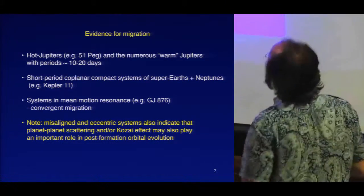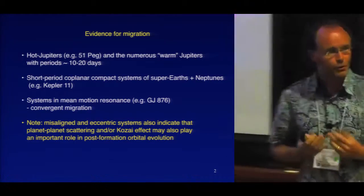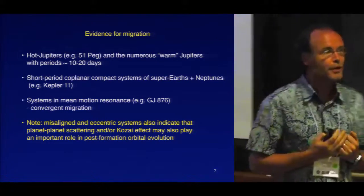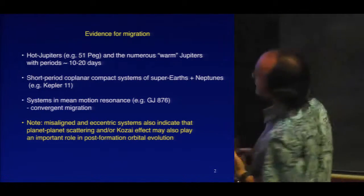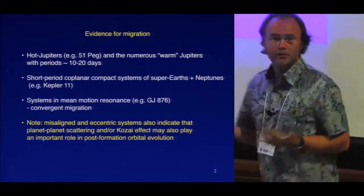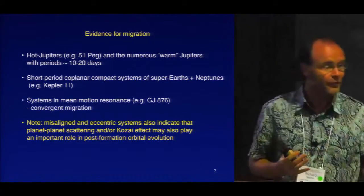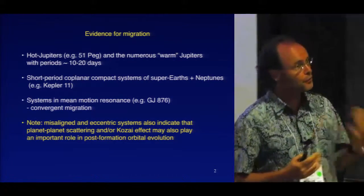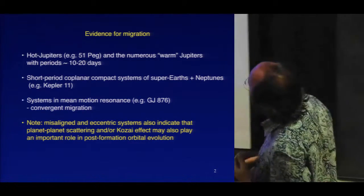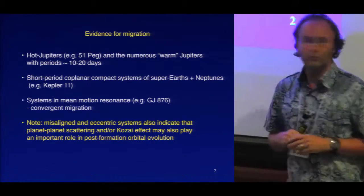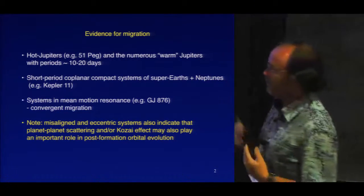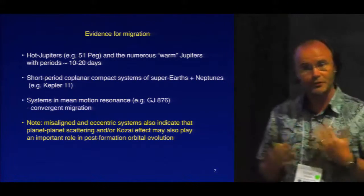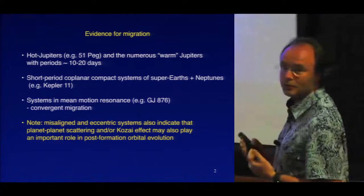Migration is a process which people talk a lot about when discussing extrasolar planets. Let's review what the evidence is that migration really happens during planet formation. We have the hot Jupiters, but there are a number of models for how one actually forms hot Jupiters — some involving interaction with the gas disk and smooth migration, some involving planet-planet scattering and the Kozai mechanism. For objects slightly further away from the central star, with orbital periods of 10–20 days, those objects are not likely to have undergone strong tidal interaction with the central star, so it's difficult to use scattering or Kozai mechanisms to explain those.